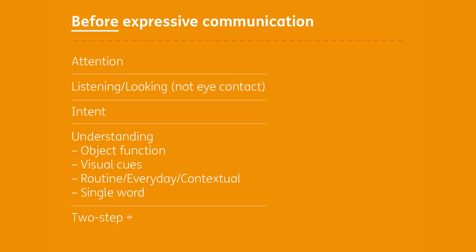Following on from that is understanding visual cues, such as understanding a point — if we point to something and a child has that awareness, they can look at what we're pointing at without needing to understand the accompanying word. Visual cues are really important in supporting the understanding of spoken language. Then we come to routine, everyday, contextual understanding — drawing on our environment. So it might be that at the same time every day mum says 'daddy's home,' and then daddy comes through the door. We don't necessarily have to understand those words; we just understand that in that context, that happens.